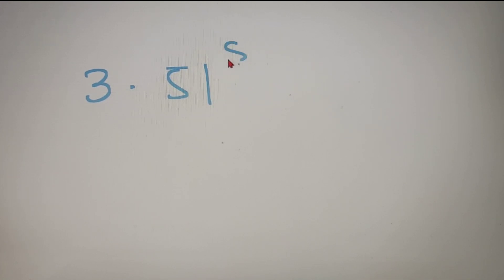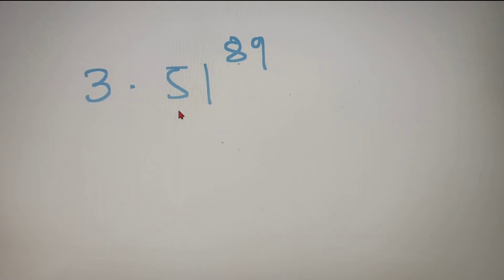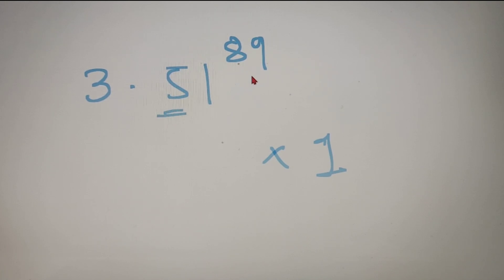For our third example, we have to find out the product of the tens digit and the unit digit of 51 raised to the power 89. Try to solve this by yourself first. Since we need the product of the last two digits, we calculate: the last digit is 1 and the second last digit is the unit digit of 5 × 9, which is 5. So the product of the last two digits is 5 × 1 = 5.